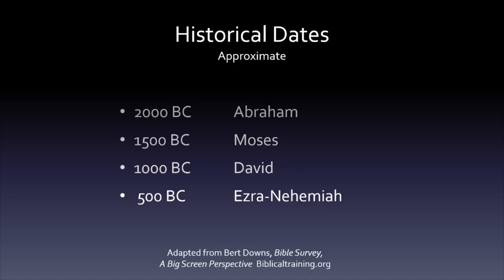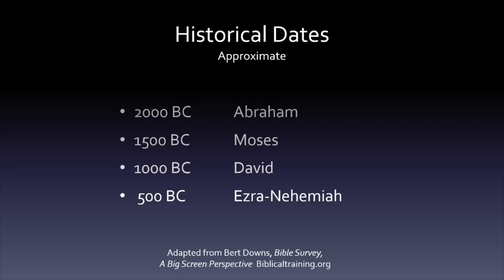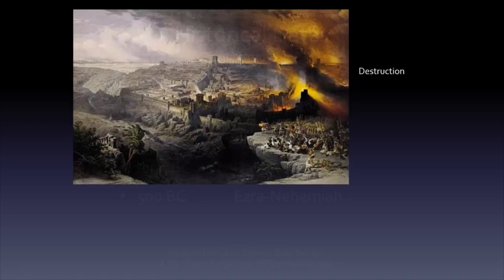But these promises were contingent on the people remaining faithful to God, and they were not. They intermarried with people from other nations and adopted their ways and false gods. Finally, God allowed part of the nation to be destroyed by Assyria, and then the remainder to be conquered by Babylon.